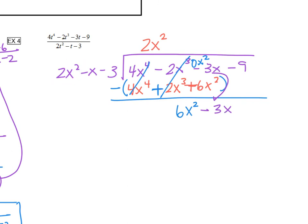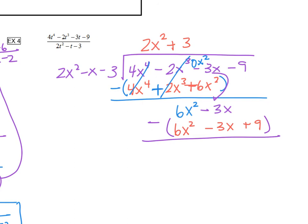2x squared times what gives us 6x squared? That's going to be plus 3. Then we multiply: 3 times 2x squared is 6x squared, 3 times negative x is negative 3x, and 3 times negative 3 is positive 9. Then we subtract. 6x squared minus 6x squared cancels. Negative 3x minus negative 3x becomes plus 3x — those cancel. And then negative 9 minus 9 is 0. So we do not have a remainder on this one, which is kind of nice.